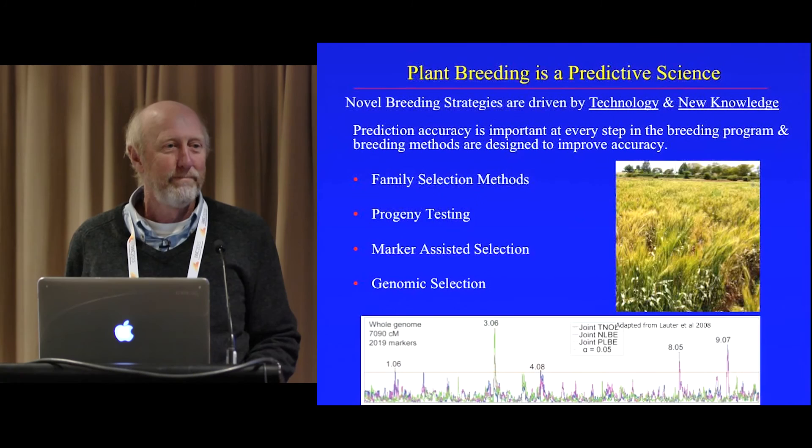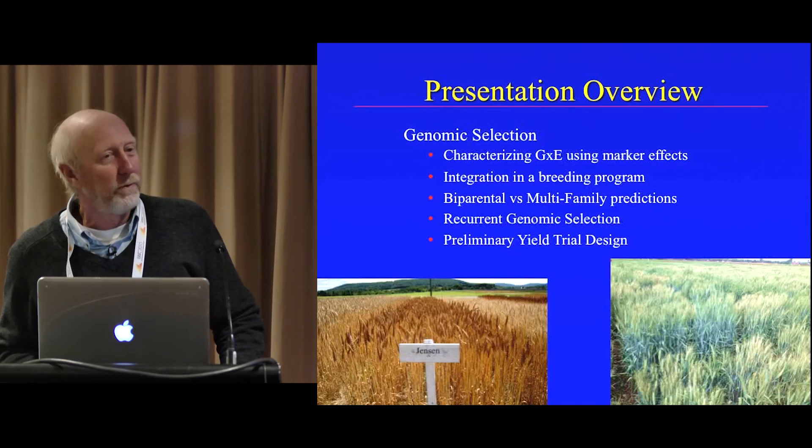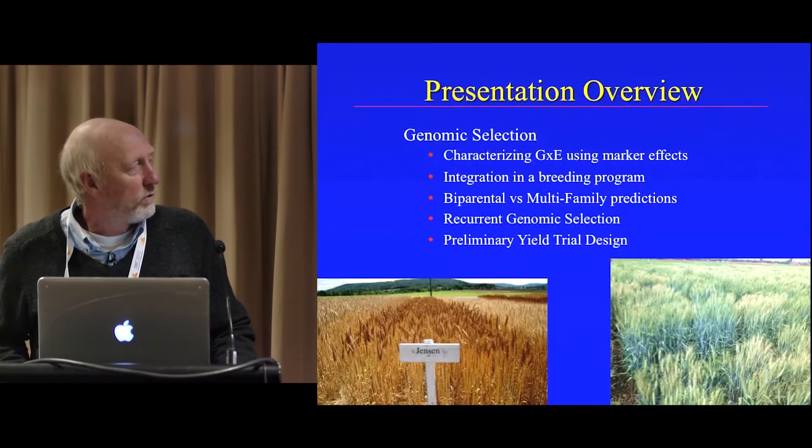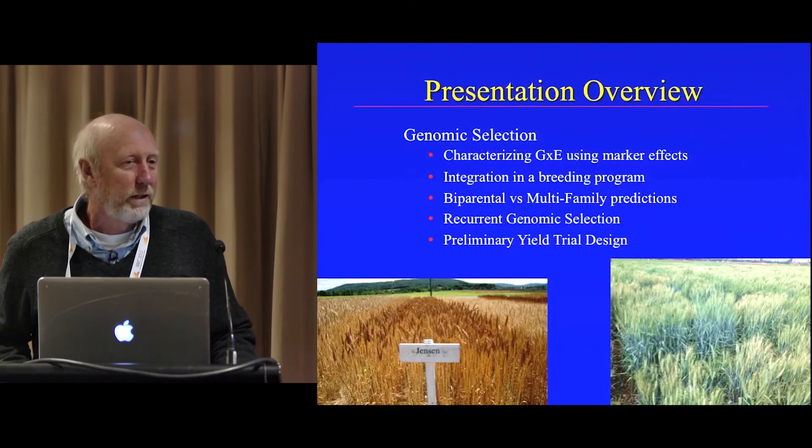That variety Jensen is one of my earlier varieties. It was named after my predecessor Neil Jensen, who was the wheat breeder at Cornell before I went there. It's an interesting variety because it combined moderate resistance to fusarium head blight with moderate resistance to pre-harvest sprouting.